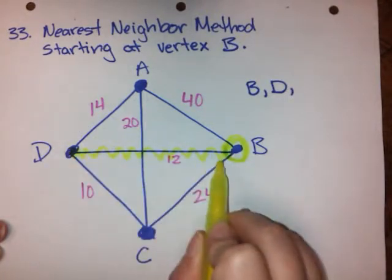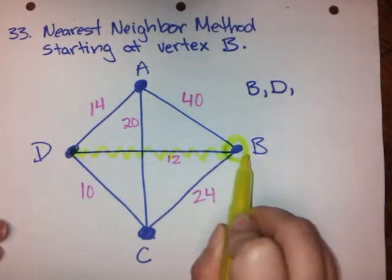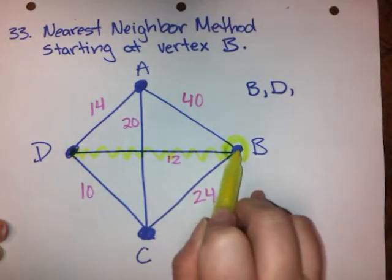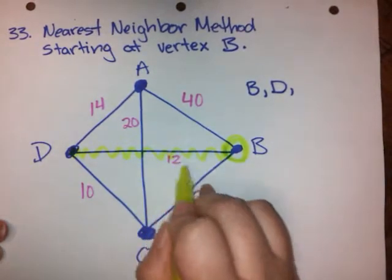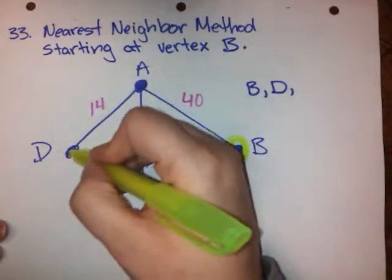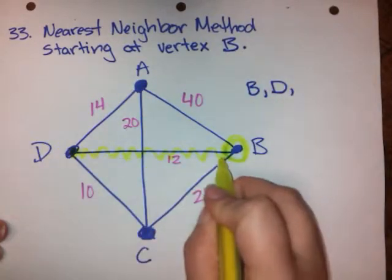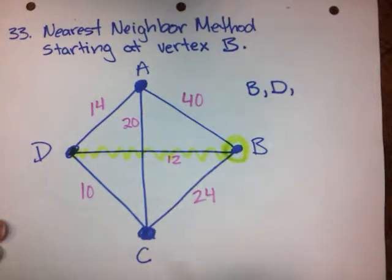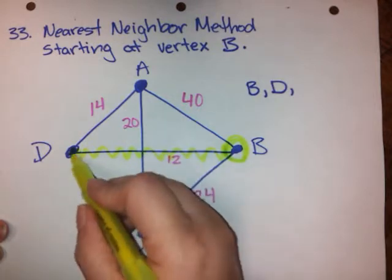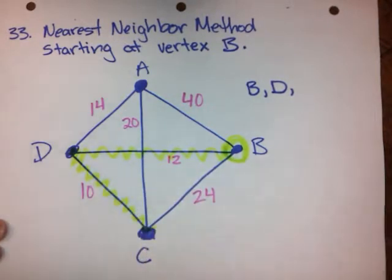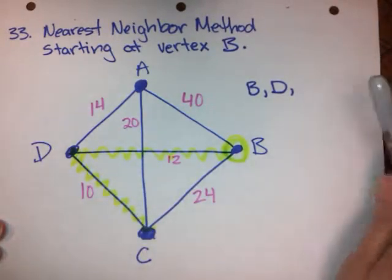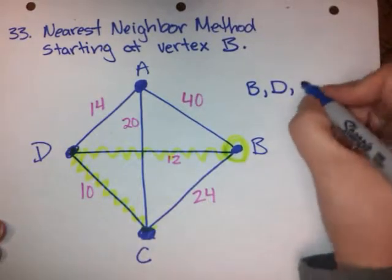D is connected to B, but I can't go there because I've already been there. So that wouldn't be a Hamilton circuit anymore if I went right back to B. So even though 12 is a less expensive option than 14, it's still not a valid choice because I've already been to vertex B. I can't go back there until the end. So the cheapest valid choice here is D to C. And that's for a cost of 10.